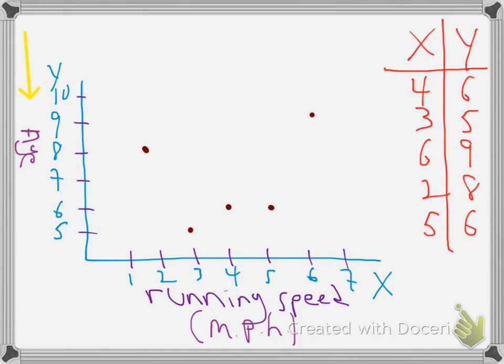And so my y variable is going to be age, and my x variable, which is plotted on the x-axis here, is running speed. So say that these are miles per hour, one mile an hour, two miles an hour, three miles an hour, like that.